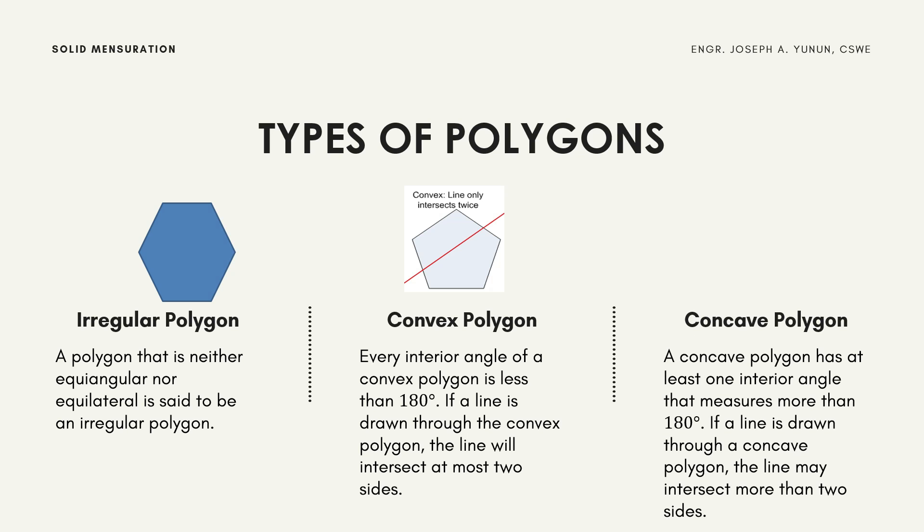A concave polygon has at least one interior angle that measures more than 180 degrees. So one of the interior angles of a concave polygon measures more than 180 degrees, as shown in the given figure.